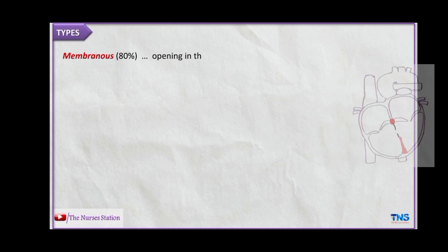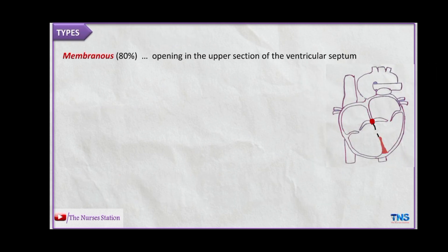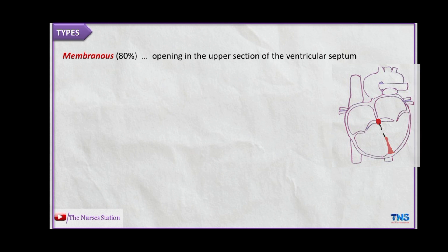The first type is the membranous ventricular septal defect, which comprises about 80% of all ventricular septal defects. This is an opening in the upper section of the ventricular septum, called the membranous section.